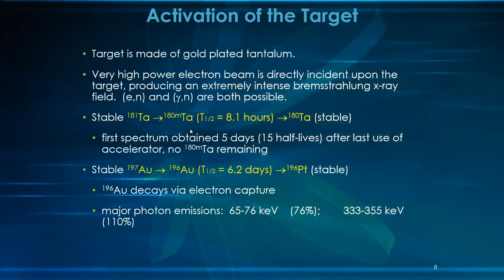The target is made of gold-plated tantalum, with a very high-power electron beam directly incident upon it, producing an extremely intense x-ray field. Both neutron loss and neutron capture are possible. Stable tantalum is converted to a metastable state with a half-life of 8.1 hours. The first spectrum is obtained after five days — about 15 half-lives after the last use of the accelerator.